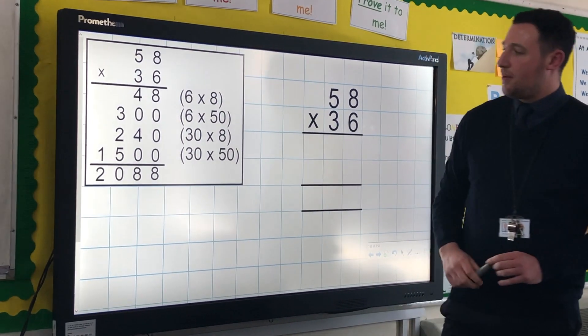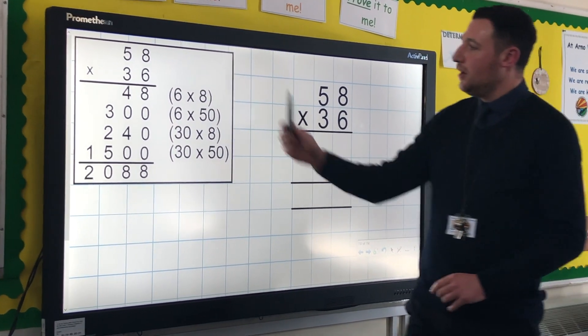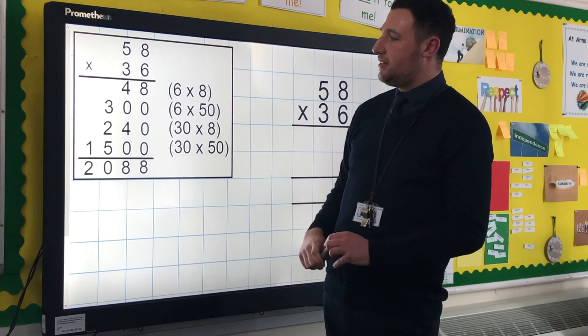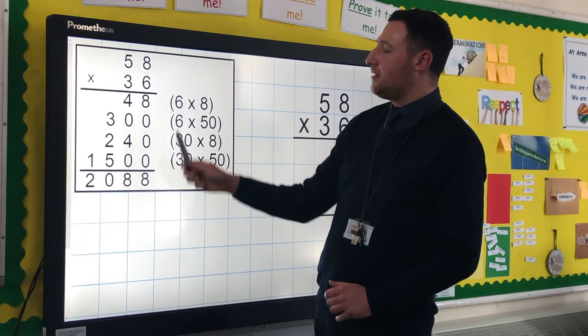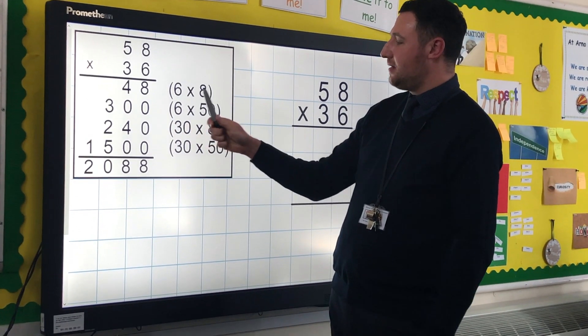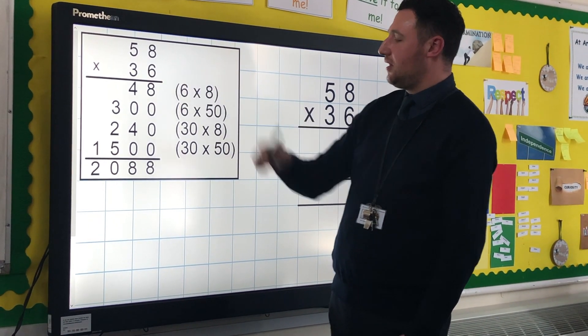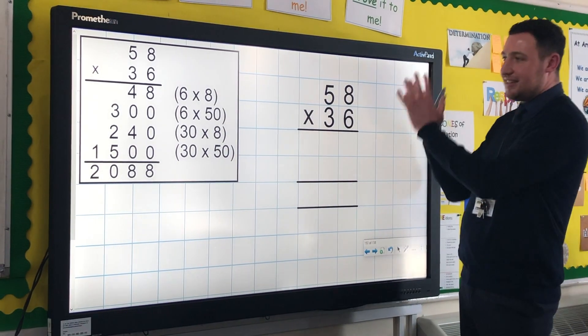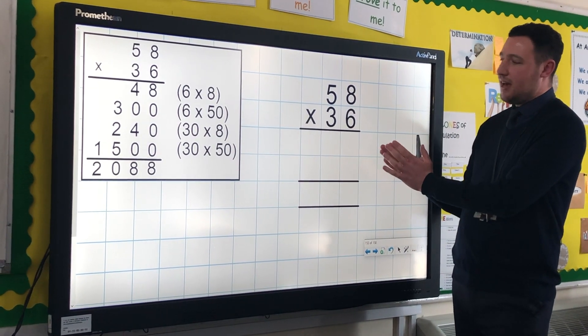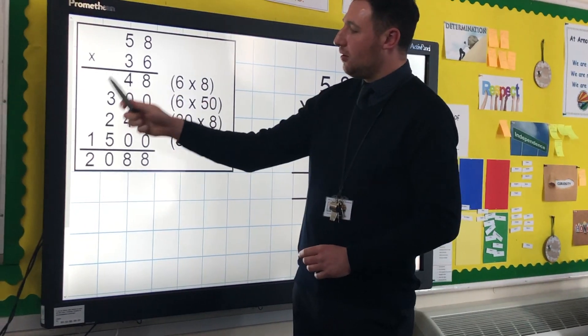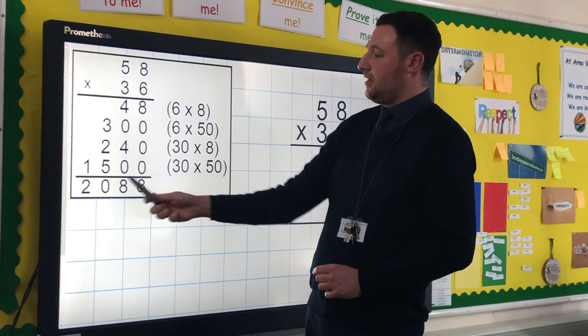So we're going to use the same calculation as in the previous video. You remember from the previous video we looked at 58 times by 36 using the expanded method: six lots of eight, six lots of 50, 30 lots of eight, and 30 lots of 50. Now we're going to do exactly the same calculations here but we're going to compact this working out.